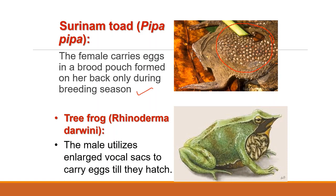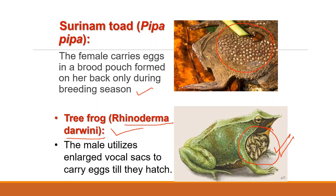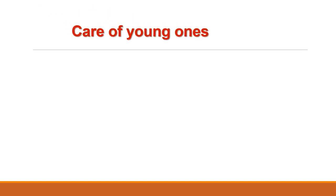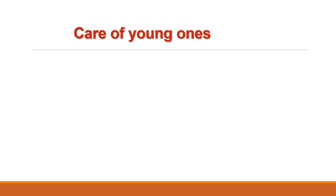This brood pouch is temporarily developed at the time of the breeding season. The male tree frog Rhinoderma darwinii utilizes its enlarged vocal sacs to carry eggs till they hatch. In viviparous animals, owing to internal fertilization followed by development of the embryo within the body of the female, nest building activity is related to the development and care of the newly born young one only.